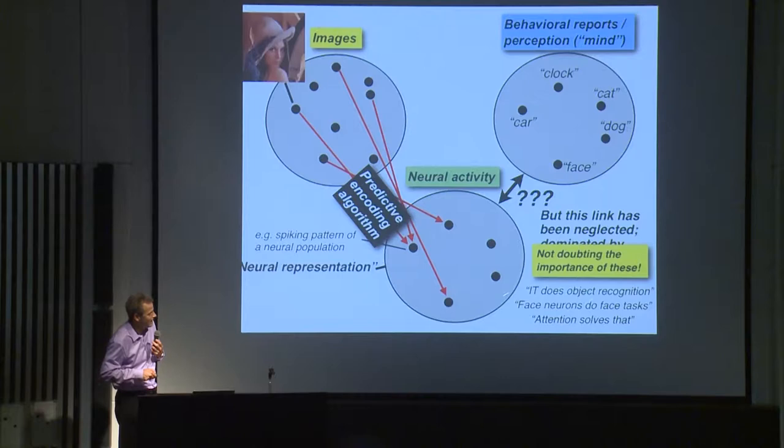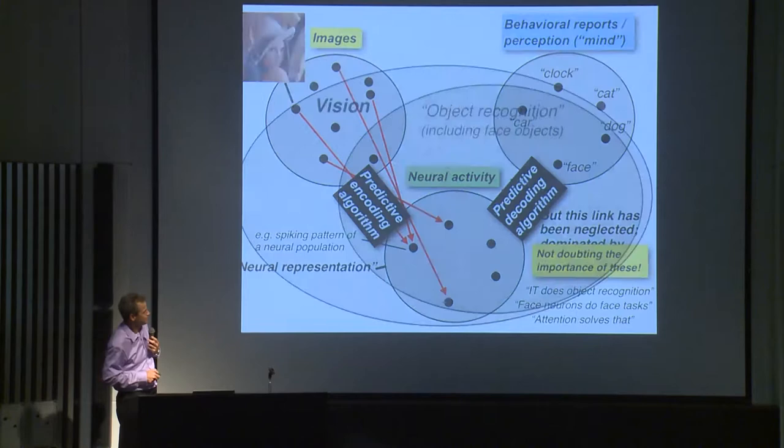In my field, word models go something like: 'IT cortex does object recognition' — that's not a model, it's a statement of belief. Or 'face neurons do face tasks,' or 'attention solves that.' These don't actually make predictions and aren't strongly falsifiable. This is not to doubt the importance of these phenomena; our lab leans on IT and face neurons. But we need predictive, quantitative decoding algorithms from neural activity to perceptual report.